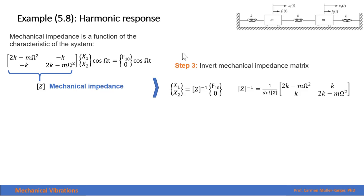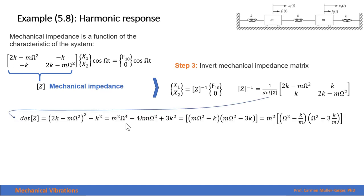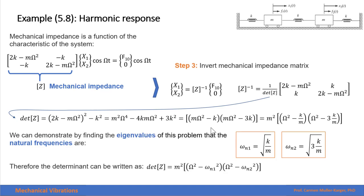The mechanical impedance of the system is a function of the characteristics of the system and the forcing frequency. The third and final step of this method is to invert this matrix to get the amplitude of the response. You can go to the review of matrices to remember how to invert a 2×2 matrix. We calculate the determinant of this matrix, which gives us this expression. We can demonstrate by finding the eigenvalues that these are the two natural frequencies.